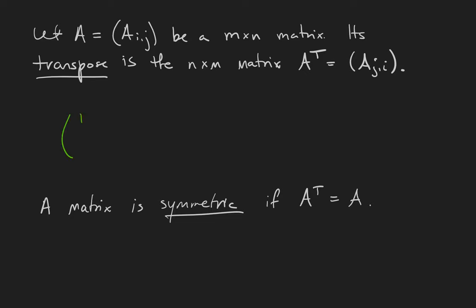So if we take the matrix 1 0 0 1 1 1 0 0 and transpose it, the first row is going to become the first column and the second row is going to become the second column. The matrix is symmetric if it's equal to its own transpose.